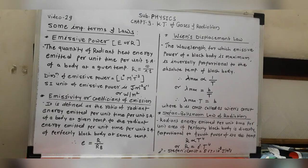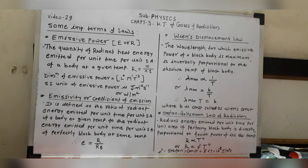Both these terms — emissive power and emissivity — are very important. In the next topic, we will state and prove Kirchhoff's law, where we prove that small a equals small e, and we will use this emissivity or coefficient of emission. Now we move on to the two laws: Wien's displacement law and Stefan-Boltzmann law of radiation.